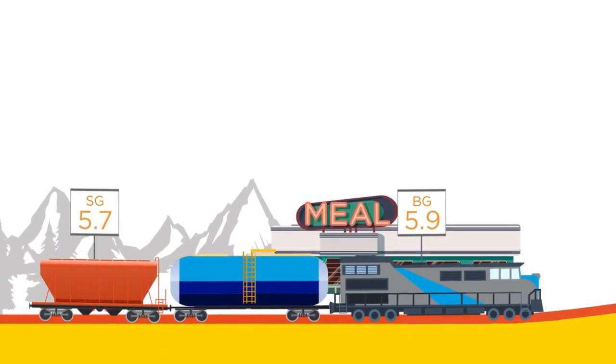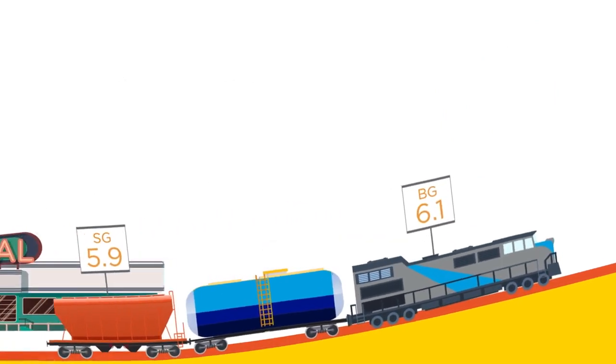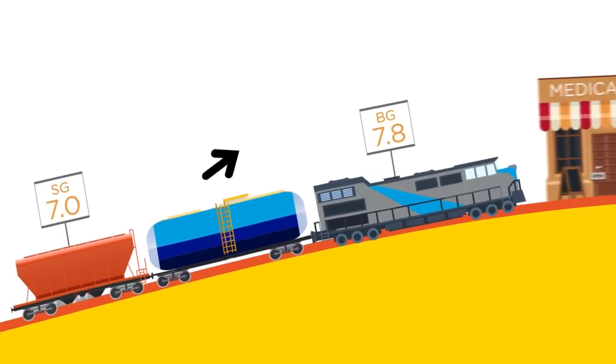But when the train climbs a hill, just like glucose might after you have a meal, there's a bigger difference in those numbers. As you can see, sensor glucose still lags behind blood glucose.